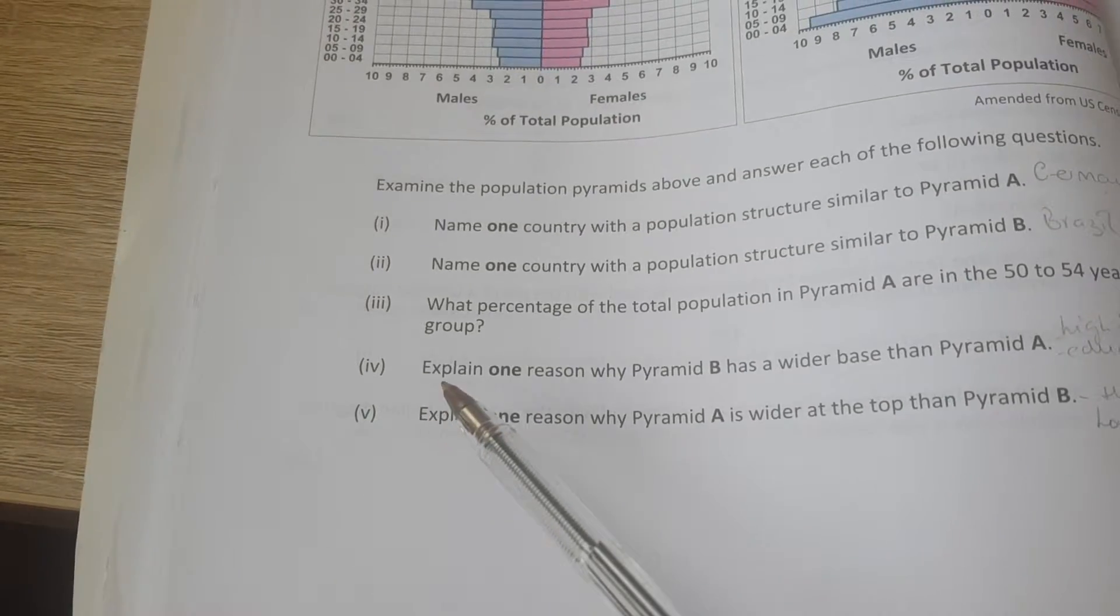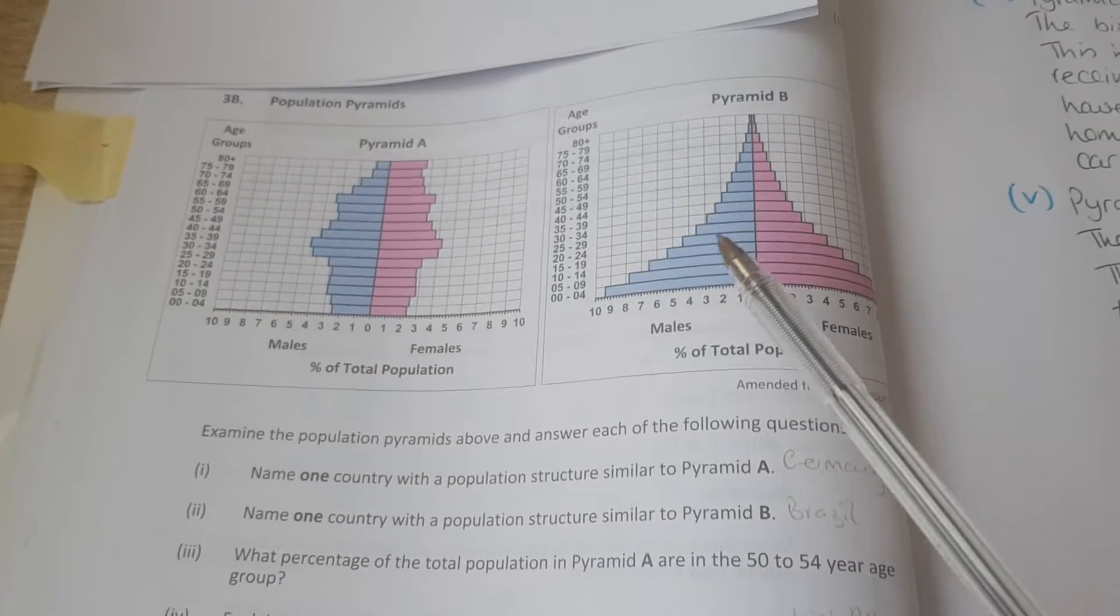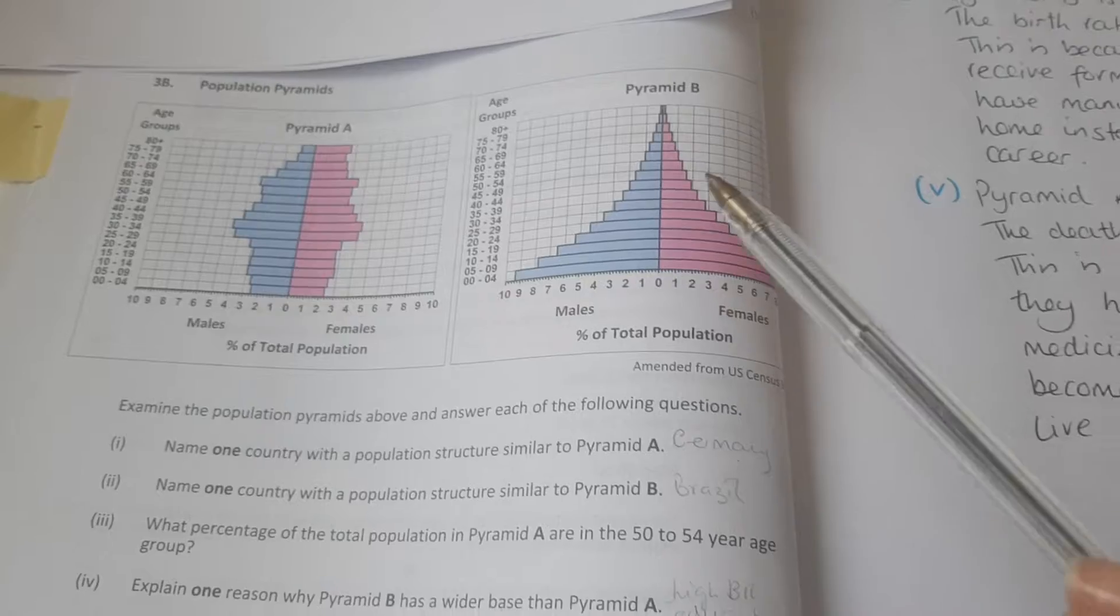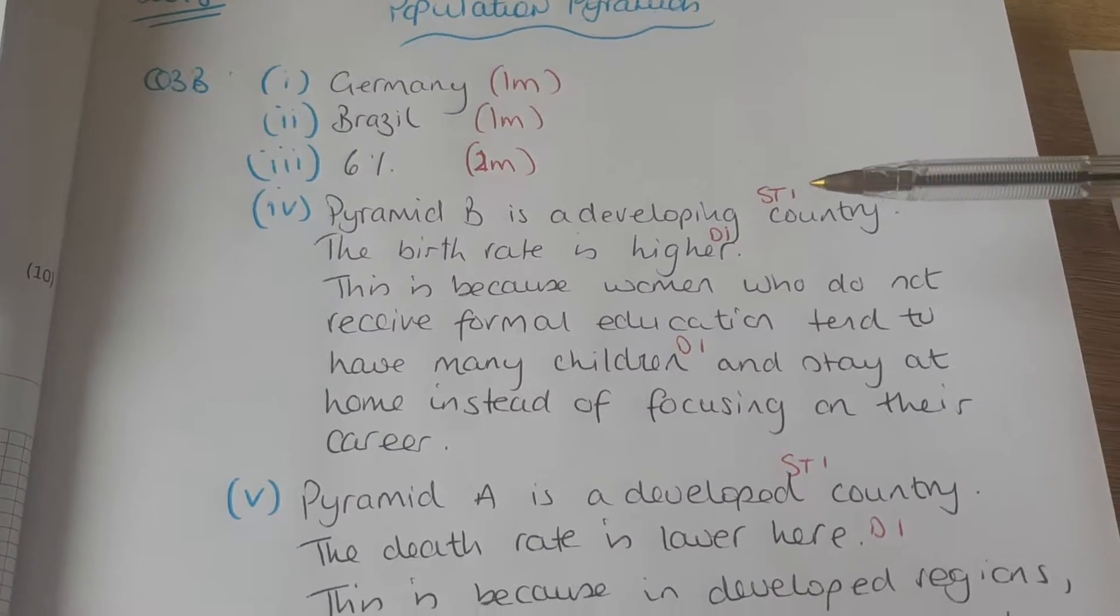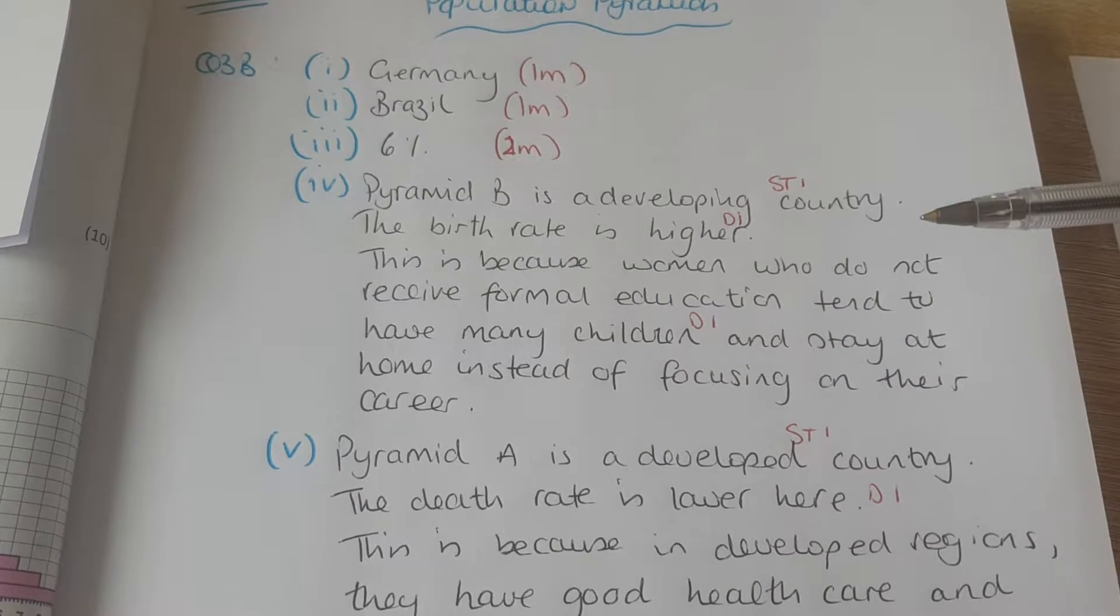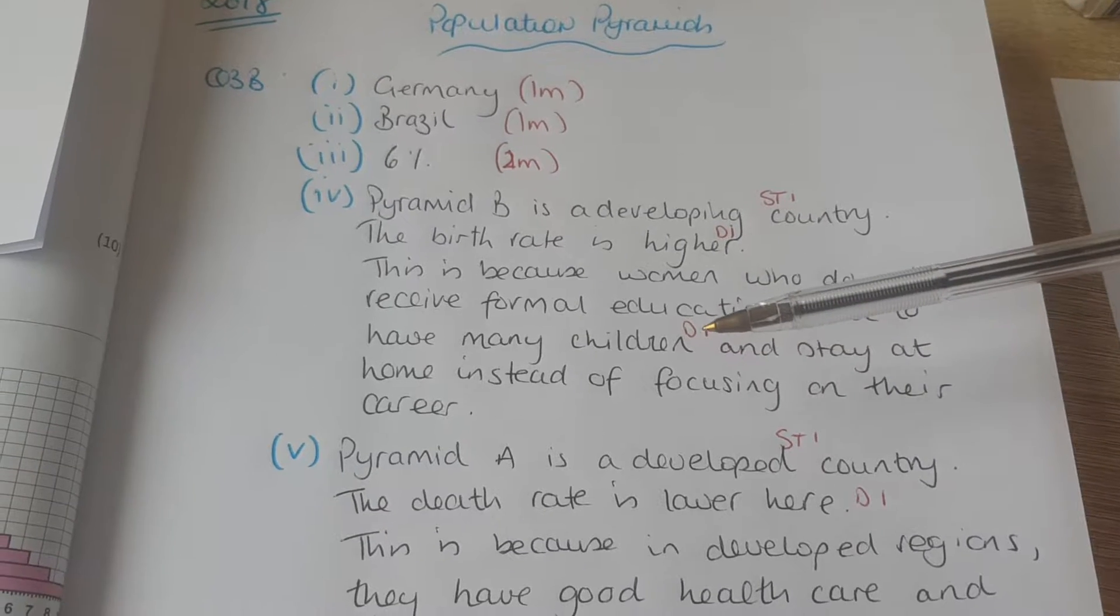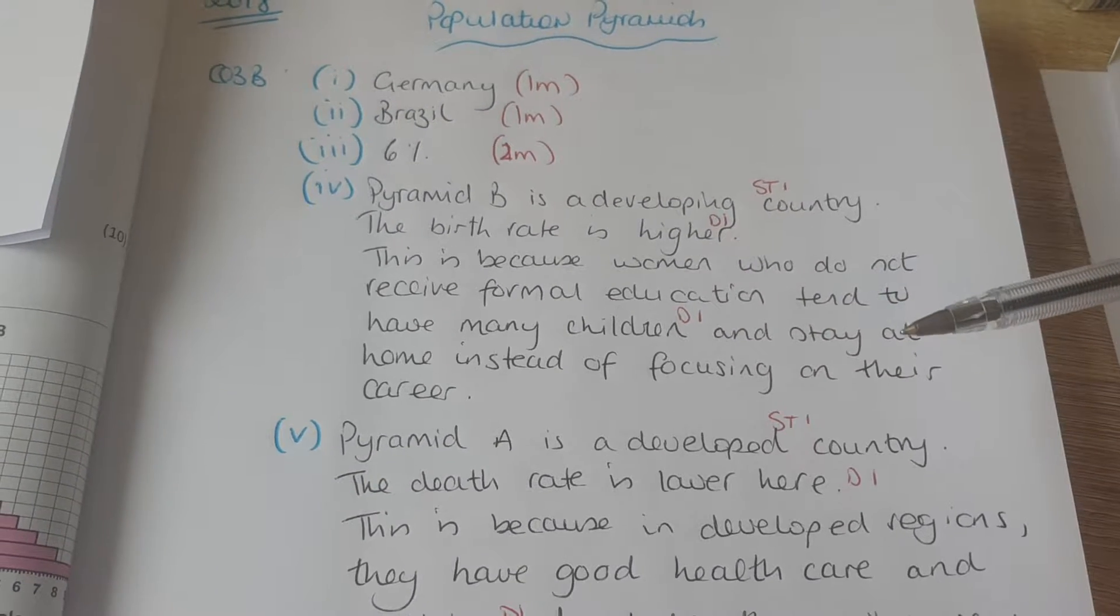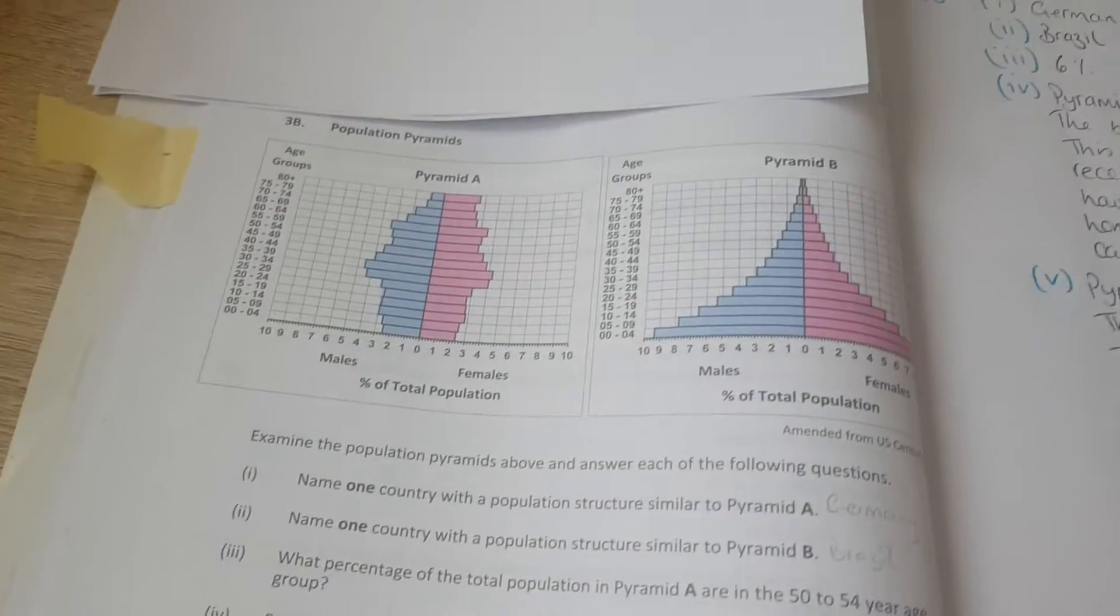So part four, explain one reason why pyramid B has a wider base than pyramid A. So it's like a proper pyramid there. Pyramid B is a developing country. The birth rate is higher. This is because women who do not receive formal education tend to have many children and stay at home instead of focusing on their career. All right, so developing country, lack of education.